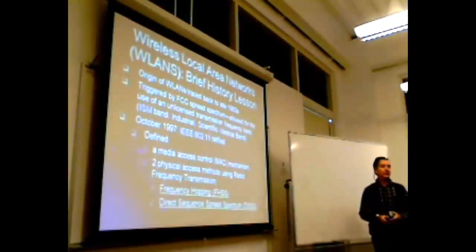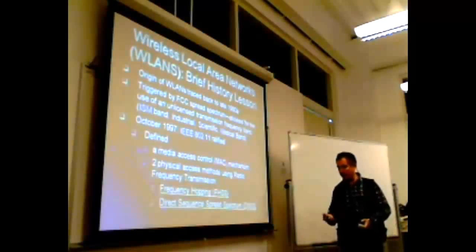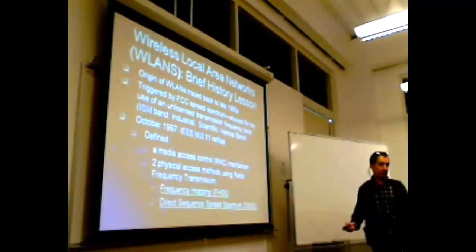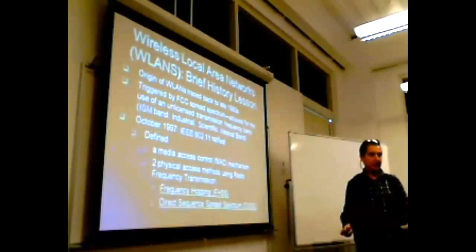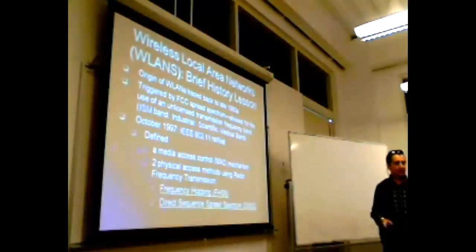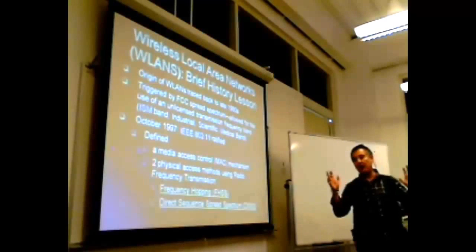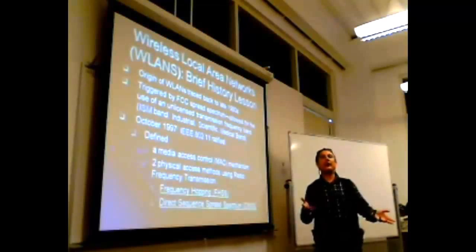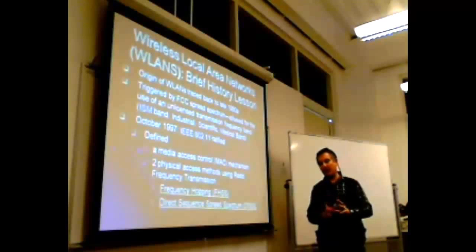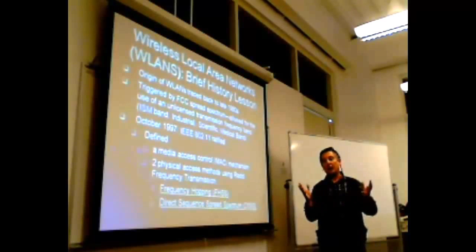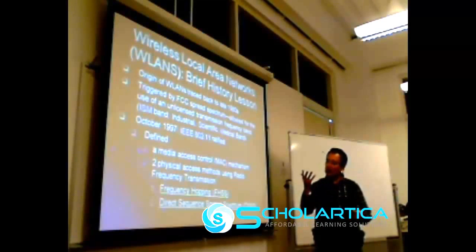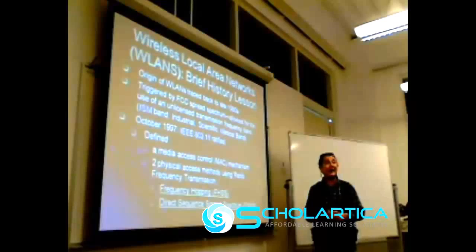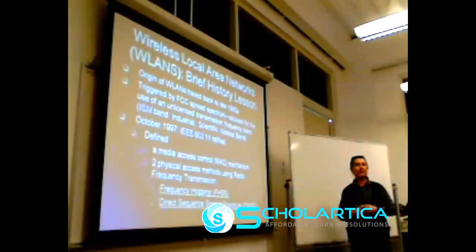In frequency hopping, what we are doing is jumping across frequencies over a given time period. For direct sequence, we have a special code that is XOR'd with the data you're going to transmit. What that code does is this: when you XOR the code with the data, the characteristics of the resulting data look like noise.